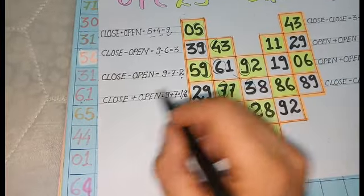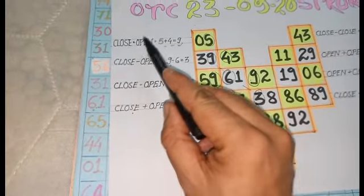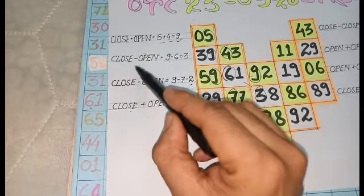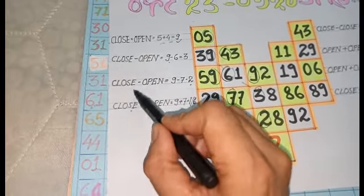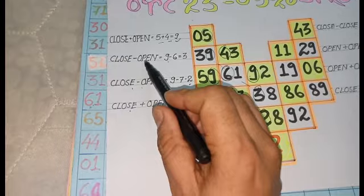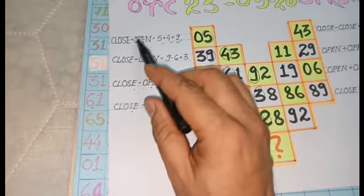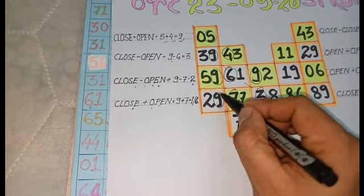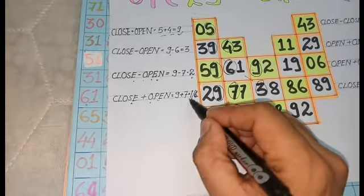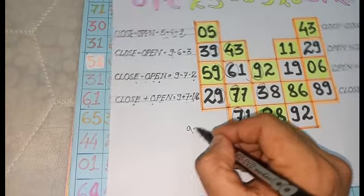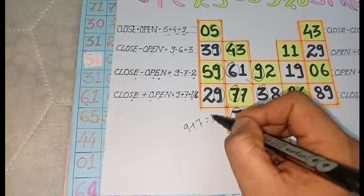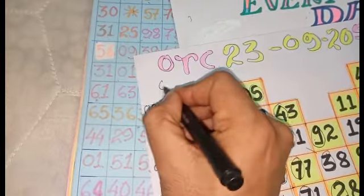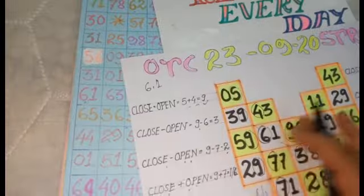Now the logic of game cut trick. You can tell them. Close plus open. Close minus open. Close minus 2 days. Close plus open. 9 plus open 7. 9 plus 7, how much is it? 16. So 16, 6. And 6 cut to 1.